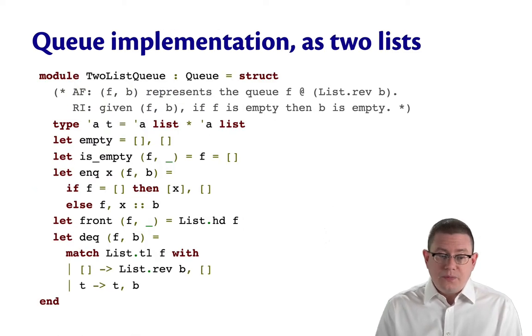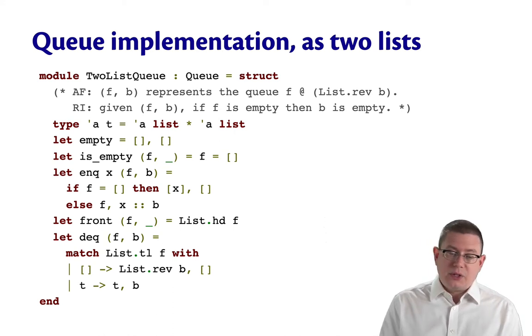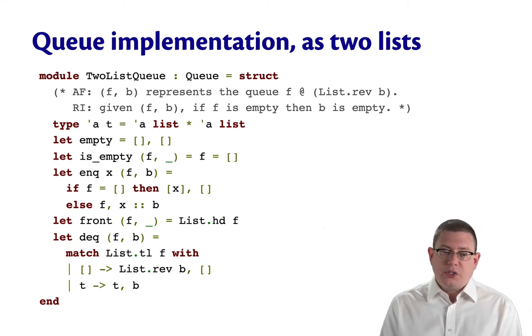Next, for dequeue, this is the most complicated of the operations. We need to see whether removing one element from the front is going to cause the front to become empty. If so, we reverse the back and install it as the front. Otherwise, we just get to remove that element. Again, our equational specification says nothing about what dequeue does to an empty queue. We've left that unspecified, and that's why I'm getting away with raising exceptions here when I try to take the tail of a potentially empty front.